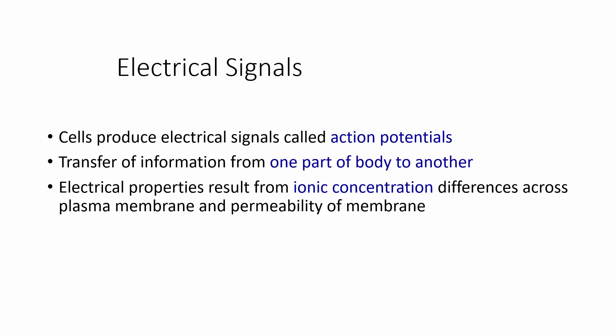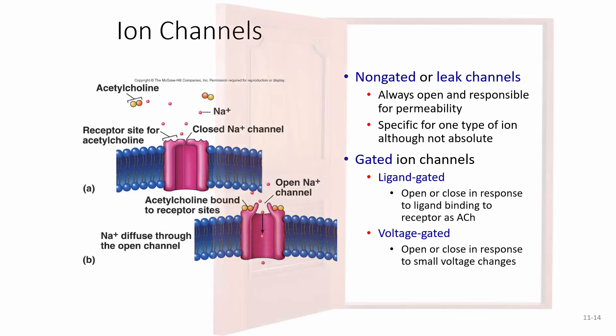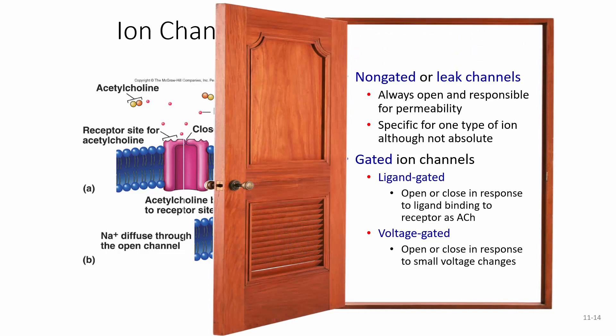This creates the electrical signal. The permeability of the membrane depends on things like channels — for instance, ion channels. A non-gated or leak channel is always open and responsible for permeability; it's specific to one type of ion. This reminds me of an open door: if you can fit through it, you can go in and out — same thing with leak channels.